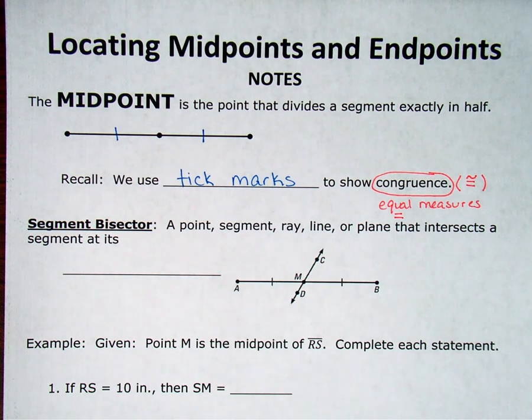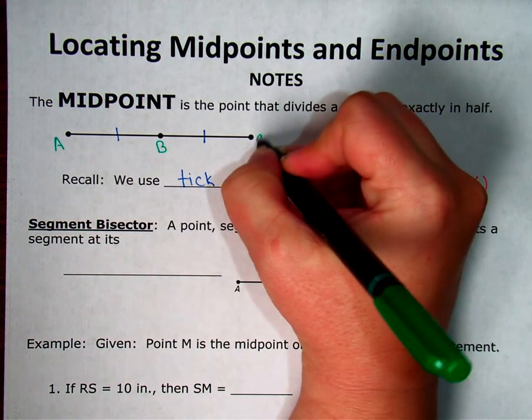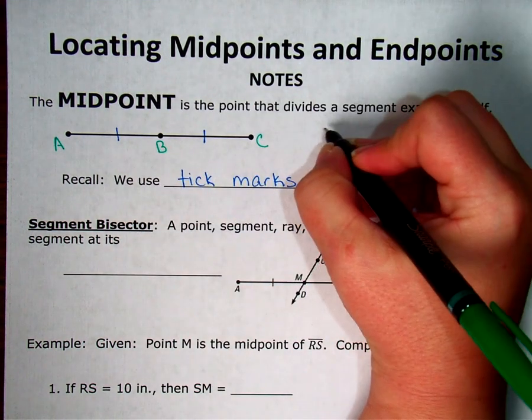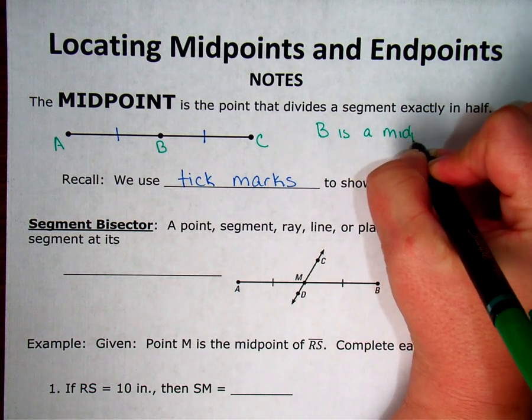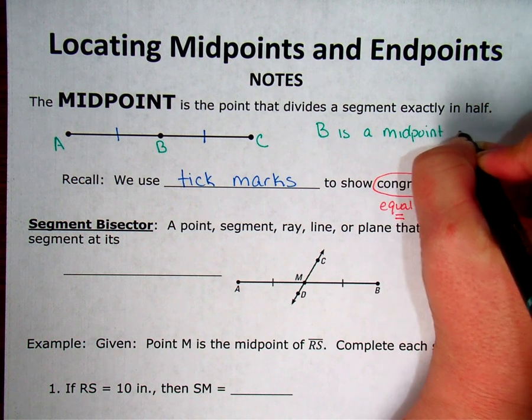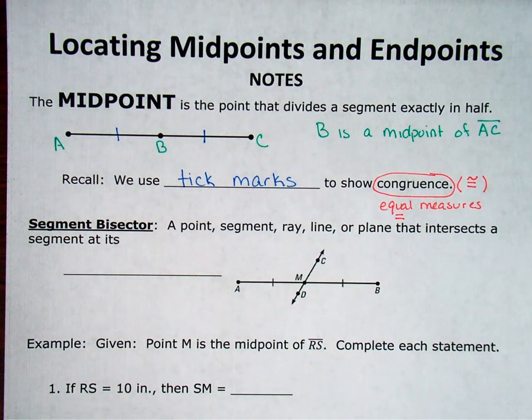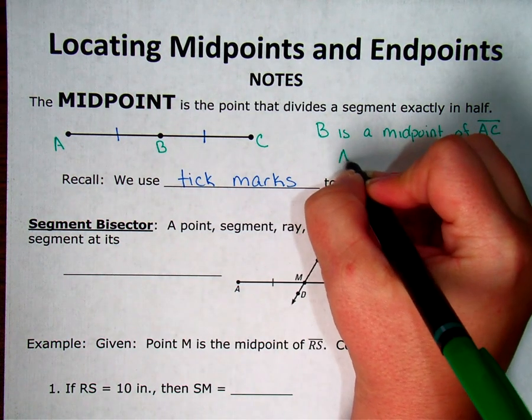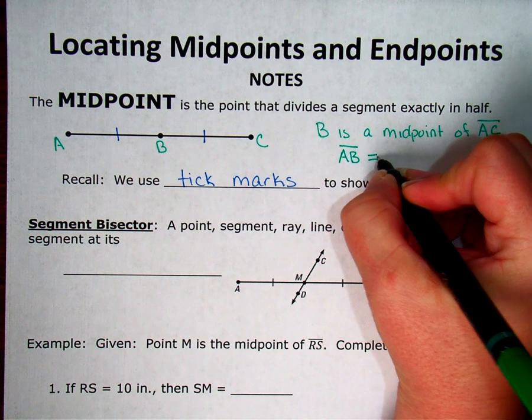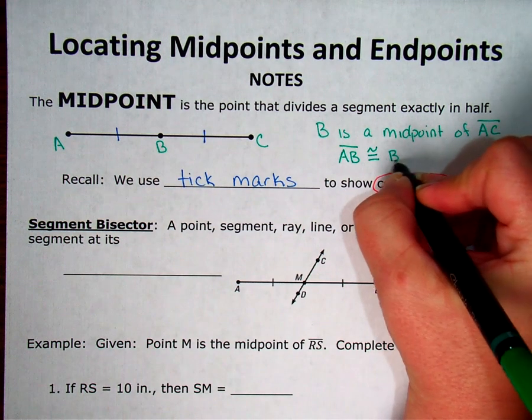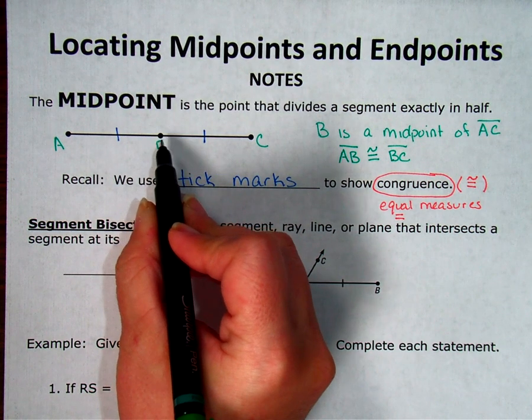So in my example, if I had letters here A, B, and C, I could say that B is a midpoint of segment AC, which would also tell me that segment AB is congruent to segment BC.